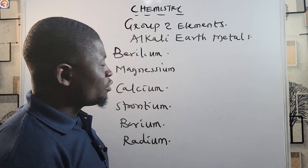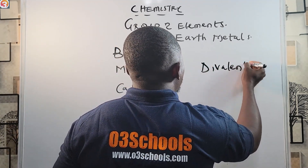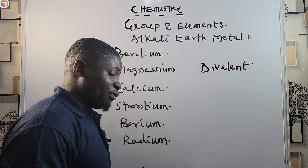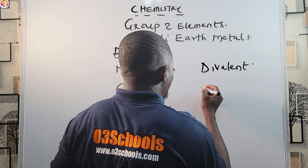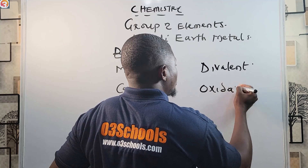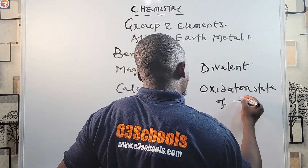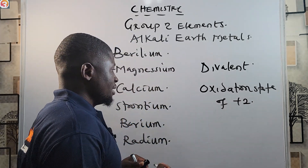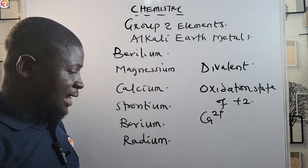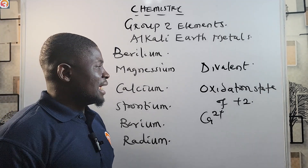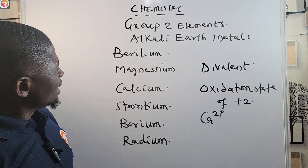Group two elements are divalent, meaning they have a valency of two. They have an oxidation state of plus two — that's why you see Ca²⁺ and Mg²⁺ written this way. For comparison, group one elements have an oxidation state of plus one and are univalent.